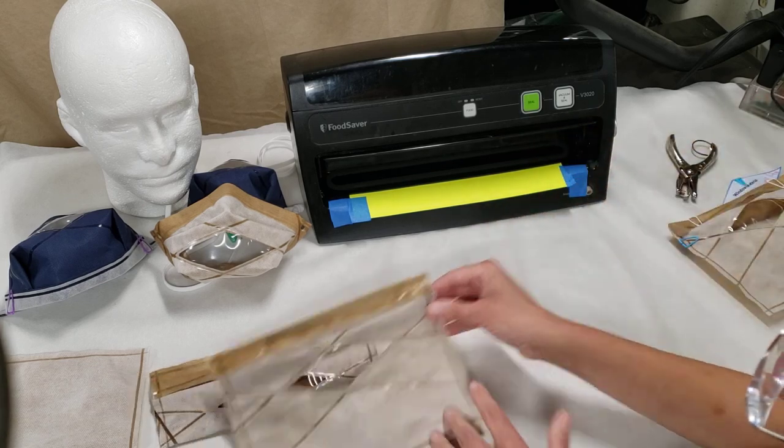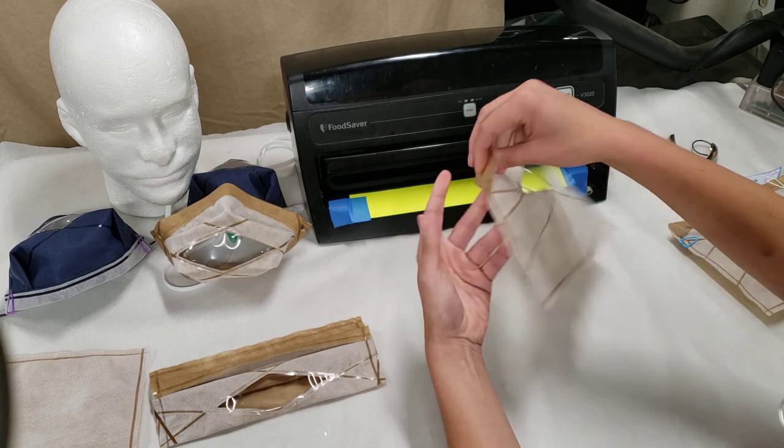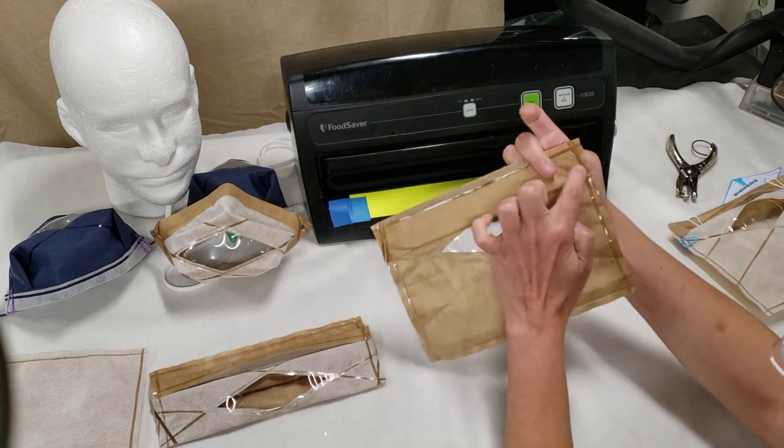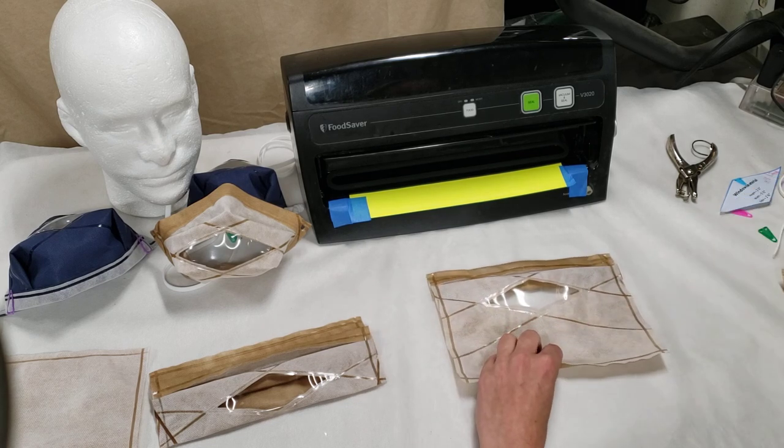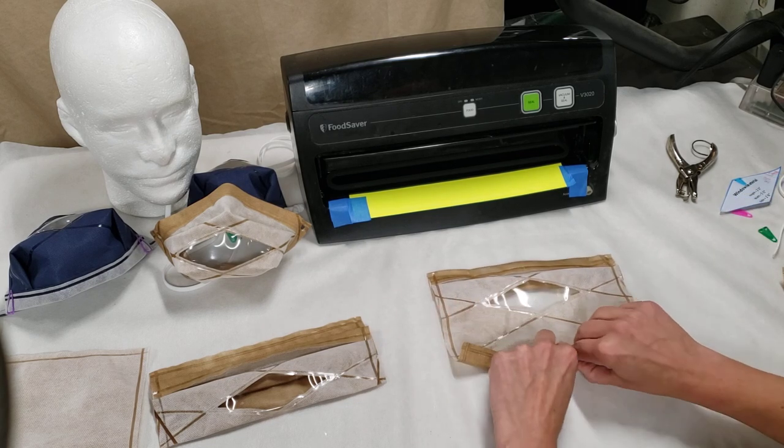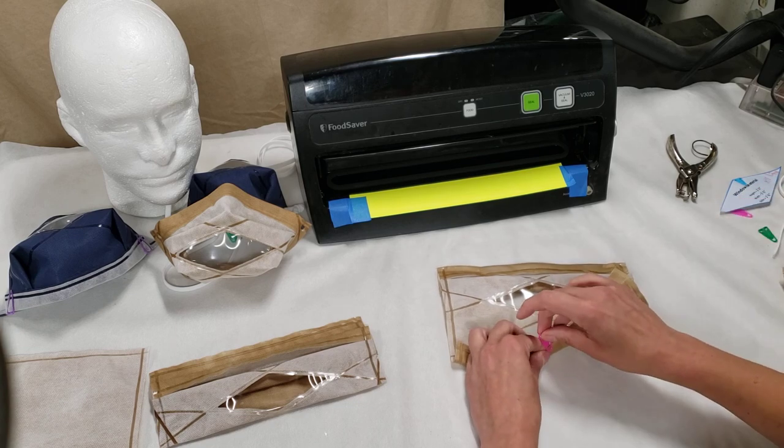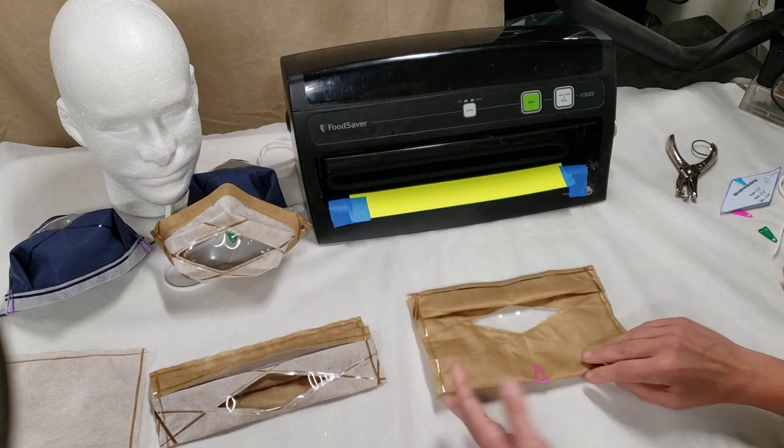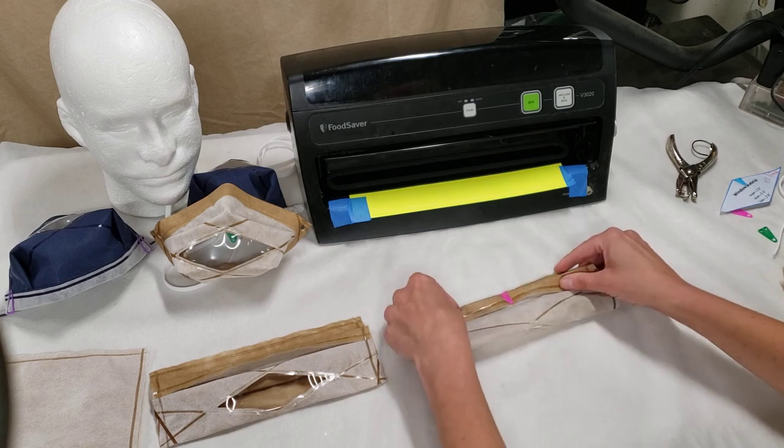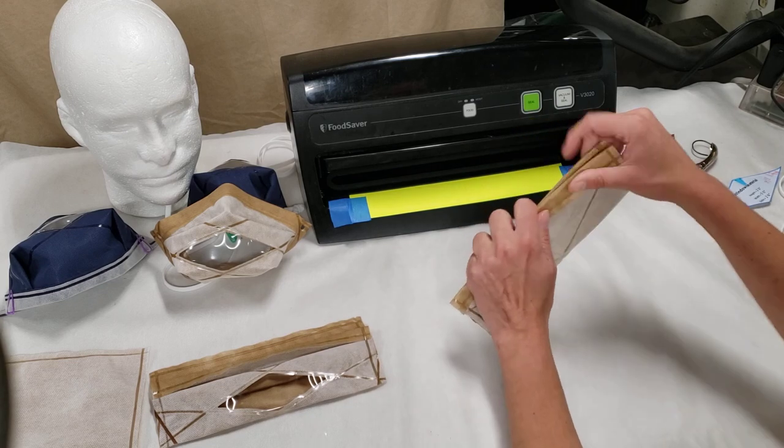When you do that you end up with a nicely sealed in top pleat. Next step is to fold up the bottom three quarters of an inch. Just put a quick clip in there.